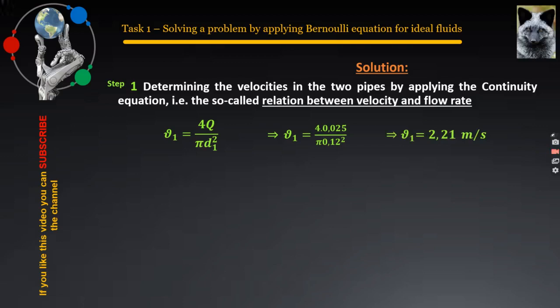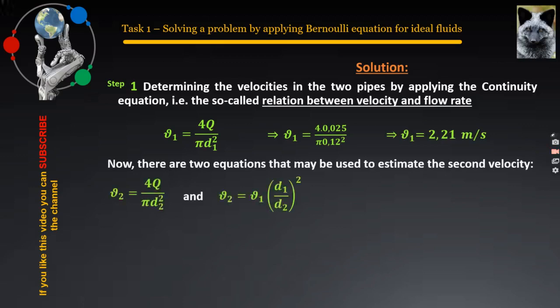For calculating the velocity in the second pipe, there are already two possibilities for this to happen. The first equation is similar to the one used in the calculation of the velocity V1. But in this case, the second one is selected. This is already an option, as one of the two velocities is known, as well as the values of the two diameters. It is time to replace the characters with their numerical values, as shown on this slide. After performing the calculation, the final value of the velocity V2 is determined. It is 4.97 meters per second. With this, step one has been successfully completed and we can move on to step two.